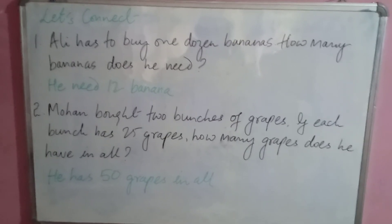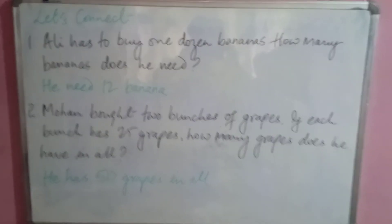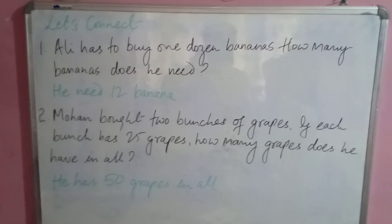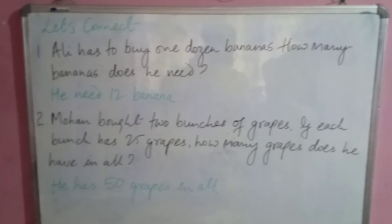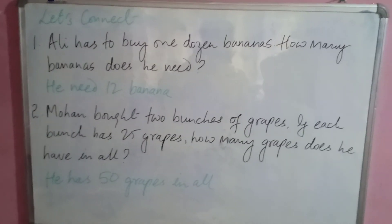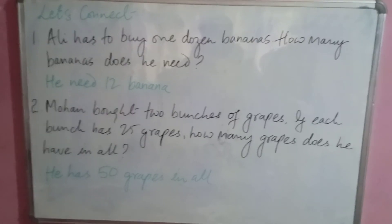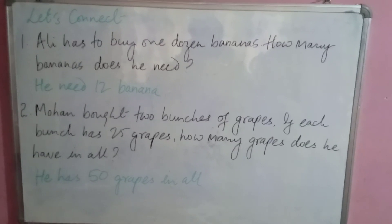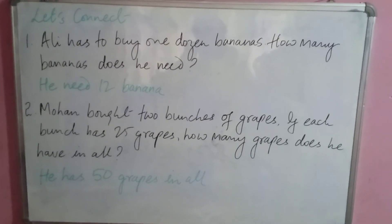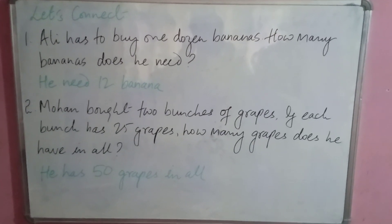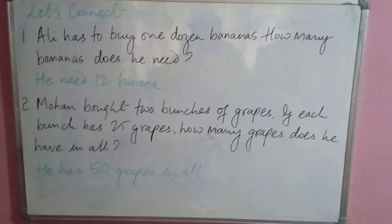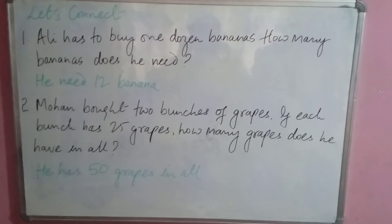Question number two: Mohan bought two bunches of grapes. If each bunch has 25 grapes, how many grapes does he have in all? 25 plus 25 equals 50, so he has 50 grapes in all. That's all for now — we'll continue our exercises in the next class. Goodbye and have a nice day!